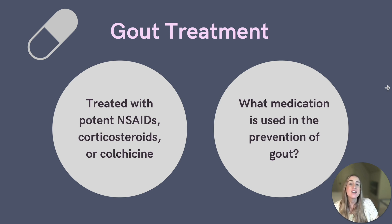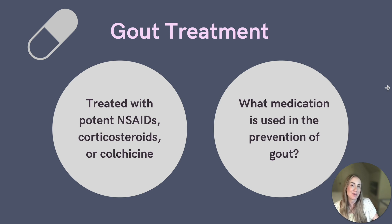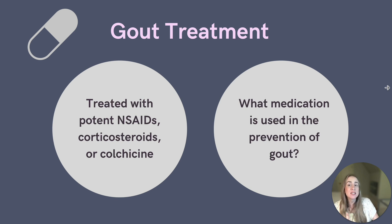Allopurinol should not be initiated during an acute attack. However, if a patient is already on it when they have a gout attack, it's okay for them to continue to use the medication. This medication can lead to agranulocytosis, which is why we need to be sure to monitor a CBC if we have a patient on this medication.